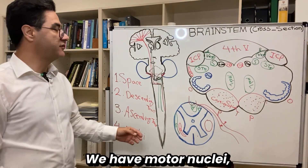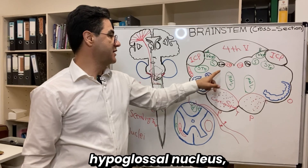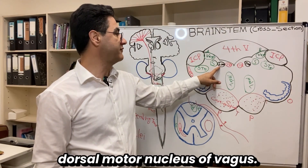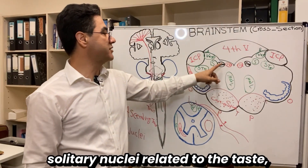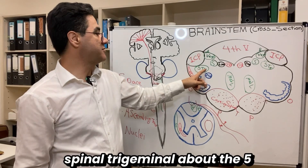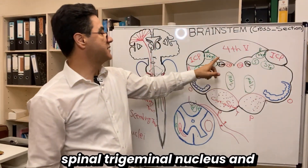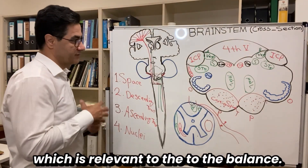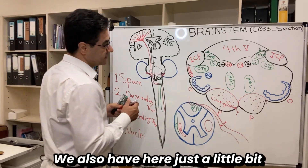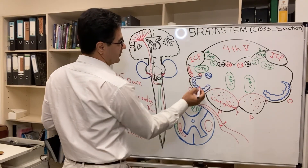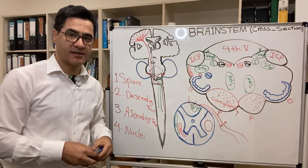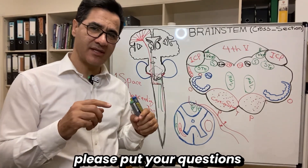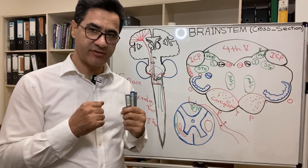To summarize the nuclei at the open part of the medulla oblongata: motor nuclei include the hypoglossal nucleus (cranial nerve 12) and nucleus ambiguus. The parasympathetic nucleus is the DMX — dorsal motor nucleus of vagus — next to the hypoglossal. Sensory nuclei include the solitary nucleus (taste), spinal trigeminal nucleus (cranial nerve 5), and posterolaterally the vestibular nucleus (cranial nerve 8, balance). We also have an autonomic nucleus just lateral to nucleus ambiguus, related to the sympathetic innervation. Please put any questions in the comments.